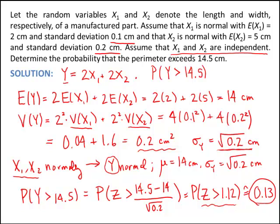I hope this has helped. This is a nice example of a linear combination of random variables. If you have a linear combination, you can add means, and you can add variances if the variables are independent. Independence is important, and a sum of normals will always turn out to be a normal distribution.